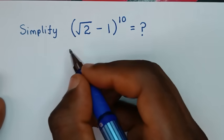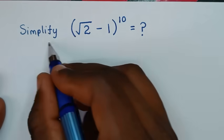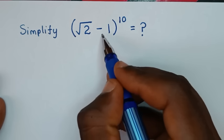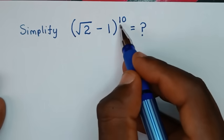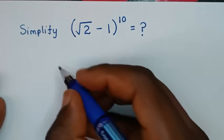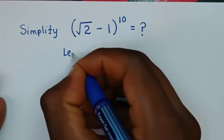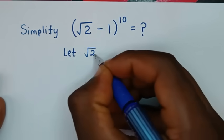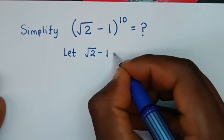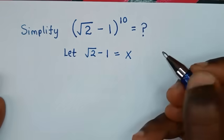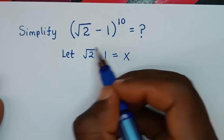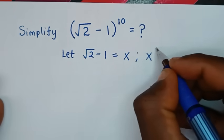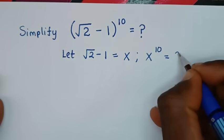Hello, you are welcome to solve this math problem of simplifying square root of 2 minus 1, bracket, power of 10. In the first step we'll start by letting the bracket which is square root of 2 minus 1 equal to x. So if we let this equal to x, therefore we'll be finding x to the power of 10.